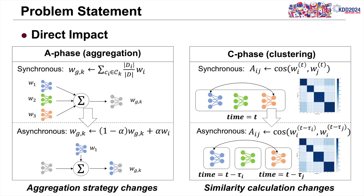Adapting to asynchrony calls for significant modifications to both clustering and aggregation. Prior CFL methods base clustering decisions on full client availability, but asynchronous clients invalidate this assumption, necessitating new strategies for accurate and timely clustering.